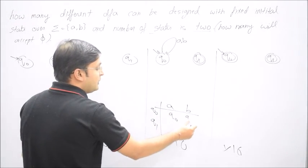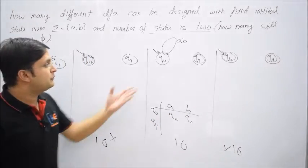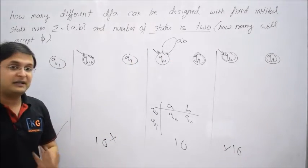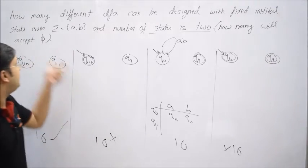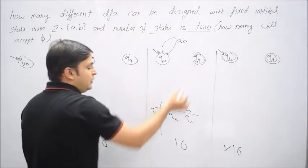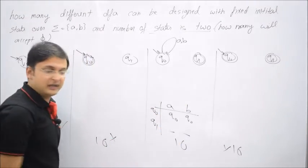But still can I generate some combinations? Like again you see, if Q0 and Q1 I have and I have two symbols a and b, now Q0 I don't have any options. Either on a or b you must come back on Q0, because if you go to Q1 then the string is going to be accepted and that should not be the case because right now we are dealing with empty cases.